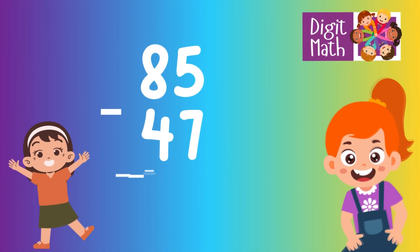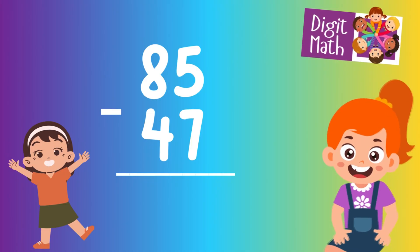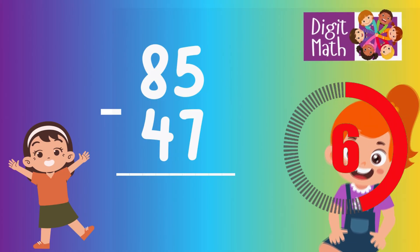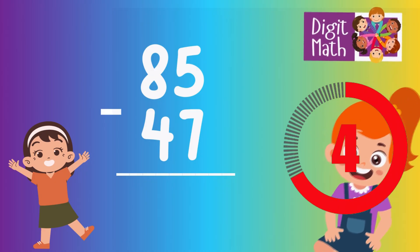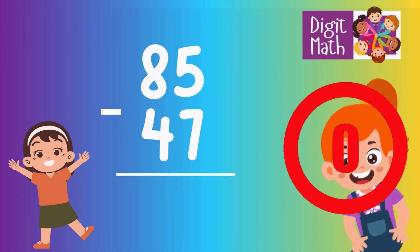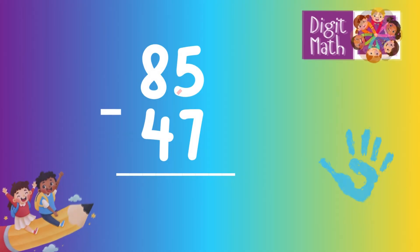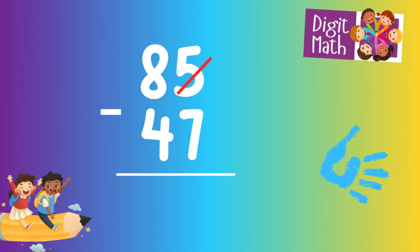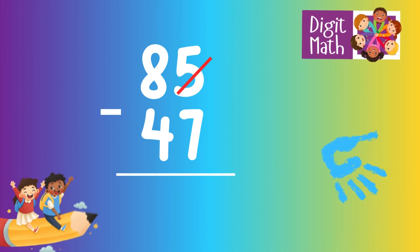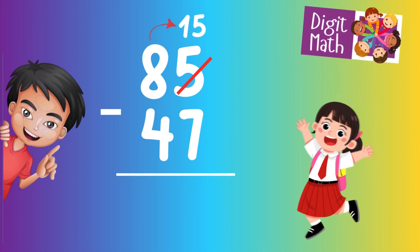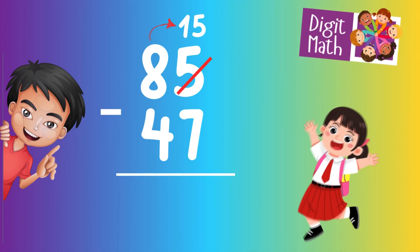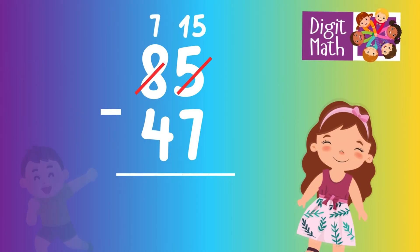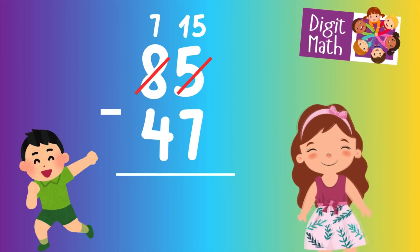85 minus 47 is... Time to think. Let's go to the answer. In the Units column, we have 5 minus 7. Since it's not possible to subtract 7 from 5, we need to borrow from the Tens column. In the Tens column, we have 8. We take 1 from the Tens, leaving 7 in the Tens column and turning the Units column into 15.